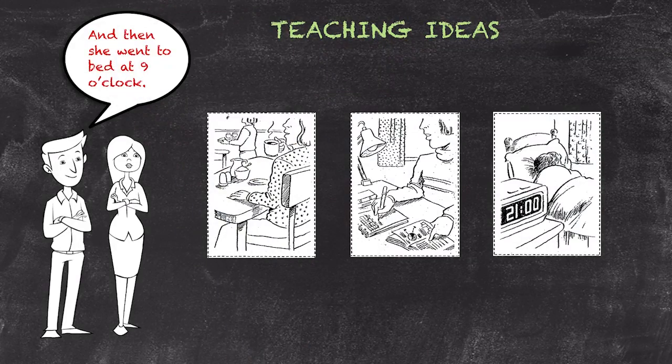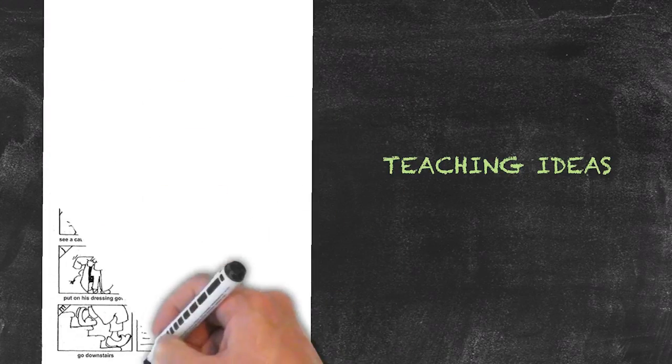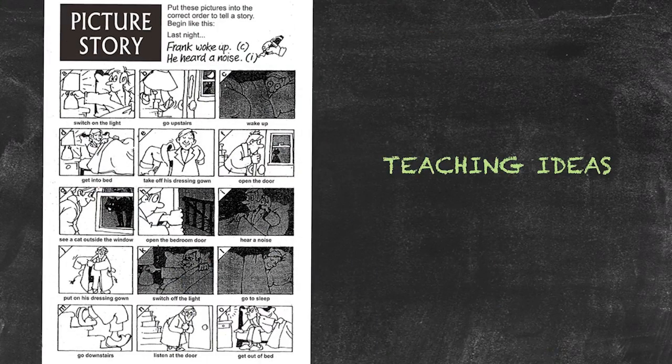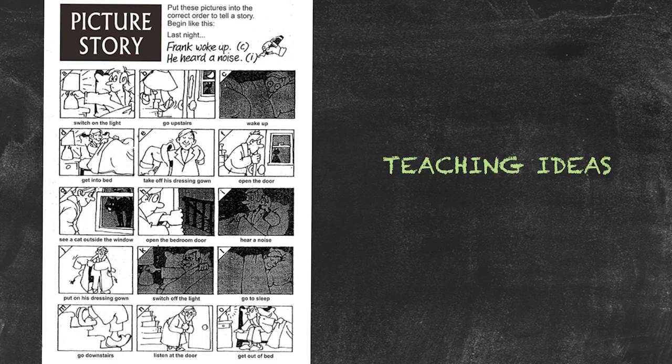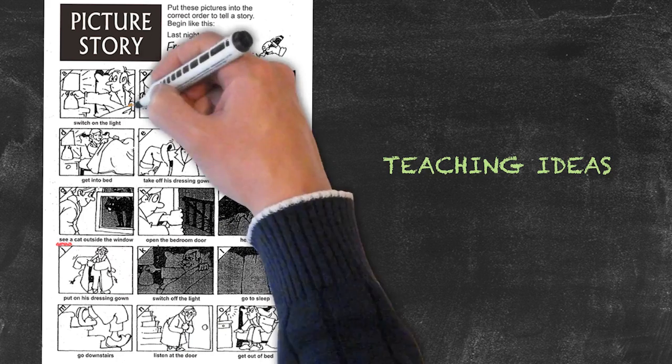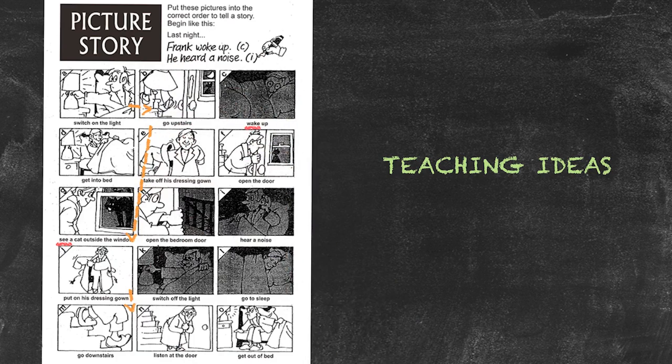In this version of the activity we previously looked at, we have more complicated verb structures, especially with the irregular verbs such as wake and see. Again, we'll challenge our students to have a look at the various prompts and to order the pictures so as to make a story. Here the focus will be on making a narrative story using the past simple tense.